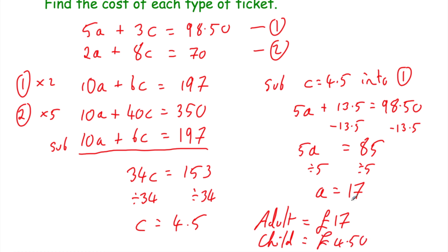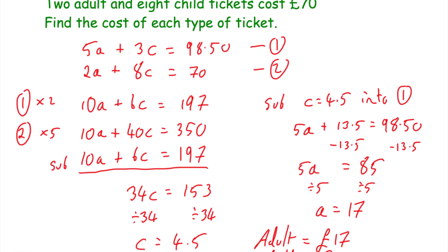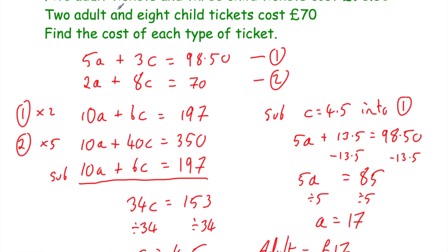And you can check that. We were told the price of 2 adult tickets is £34. And 8 child tickets: 8 times £4.50 equals £36. And £34 plus £36 equals £70. So we've got it right.